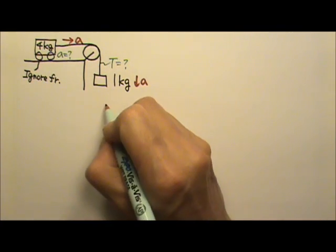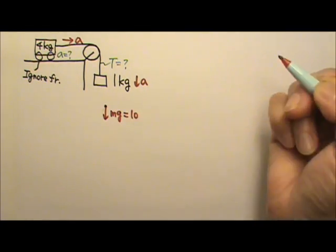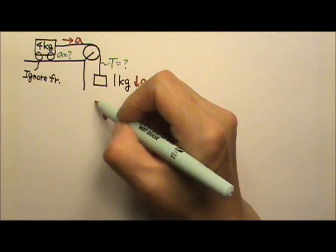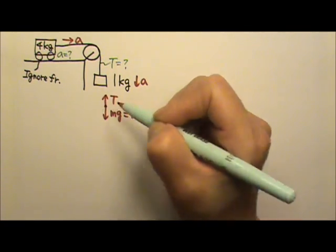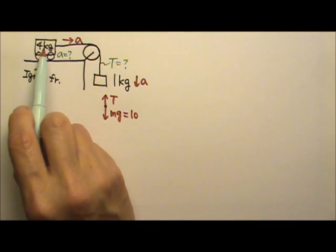For the 1 kg, it's easy. You just have Mg going down 10 N. It's touching the rope that's pulling upward. That's it. It's not touching anything else.